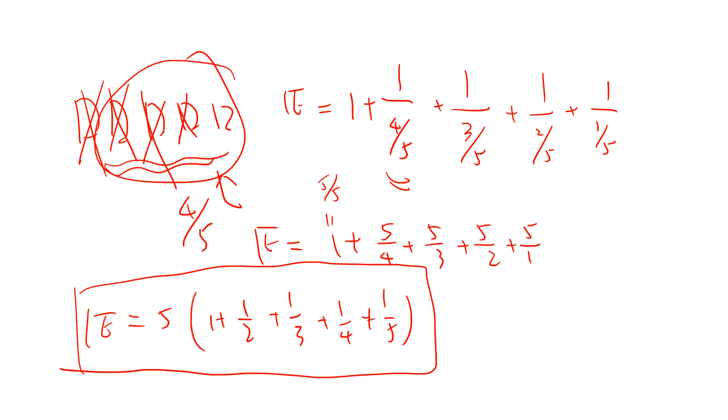For the general case with n coupons, a similar process shows the answer must be n times the sum from 1 to n of 1/i.